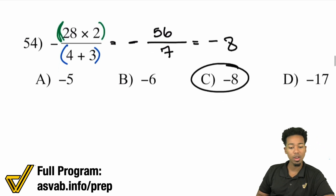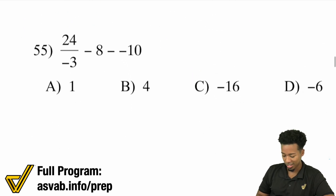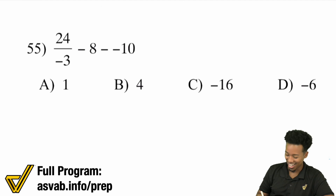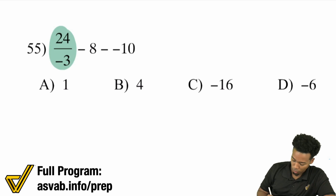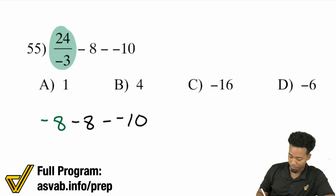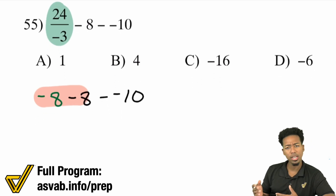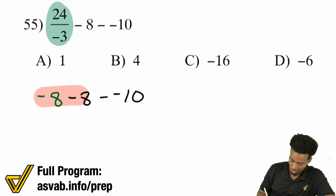We have to know our mental math to get this done fairly quickly. This next one looks pretty crazy. We have a division right here — that's a fraction. 24 divided by negative 3 is negative 8. Bring everything else along. From here we see negative 8 minus 8. When you're already negative and subtracting, you're getting more negative — going back 8, then back 8 again, that's negative 16.